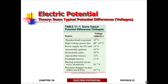What about real-world voltage examples? The thunder-to-ground voltage difference is going to be about 100 million volts. Inside the TV tube, that's going to be 10,000 volts. A battery — everybody knows that. A flashlight battery is one and a half volts. And high power lines — that's about 100,000 to a million volts.